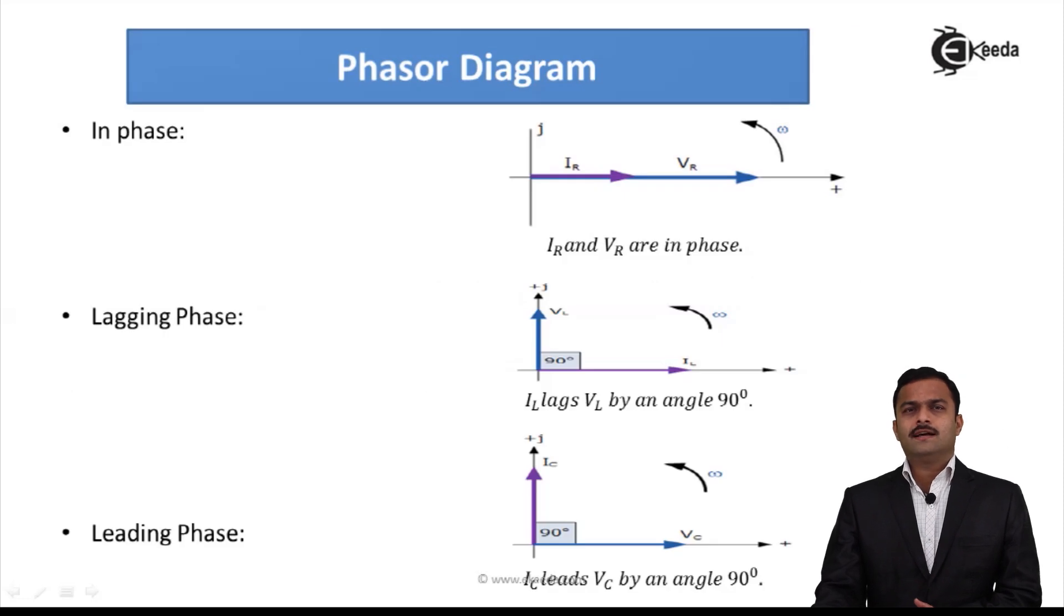So here I have considered three cases, and I have considered only two quantities. Actually the quantities could be more than two. It could be current, voltage, power, flux. So whenever quantities are in phase, the phase relationship is like this.